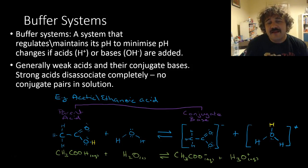A really good example is ethanoic acid. Here we've got the parent acid, and this is the hydrogen that comes off. This is the conjugate base - it's missing that hydrogen now.